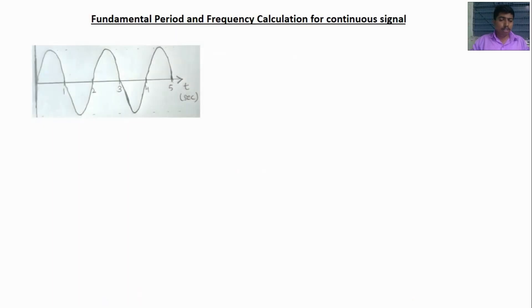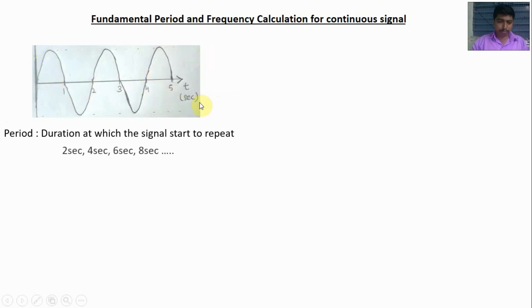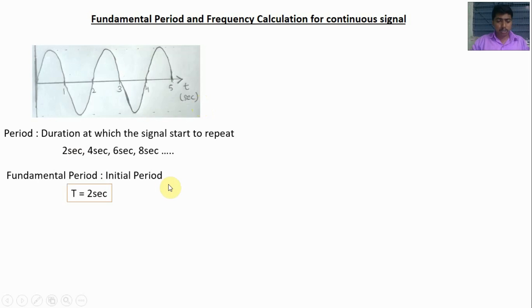Let us take a signal X1. By observing the signal, the signal starts at 0 seconds and for every 2 seconds it starts to repeat. The fundamental period is defined as the duration at which the signal starts to repeat. So the period for the signal is 2 seconds, 4 seconds, 6, 8 — because the signal's repetition occurs for every 2 seconds. The fundamental period means the initial period, so it is 2 seconds.